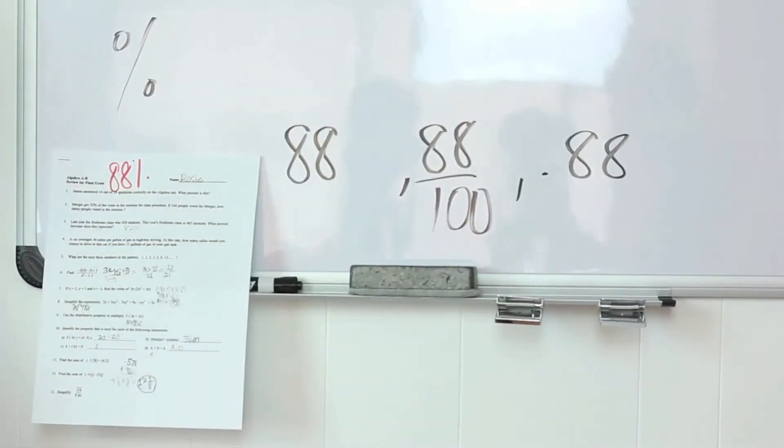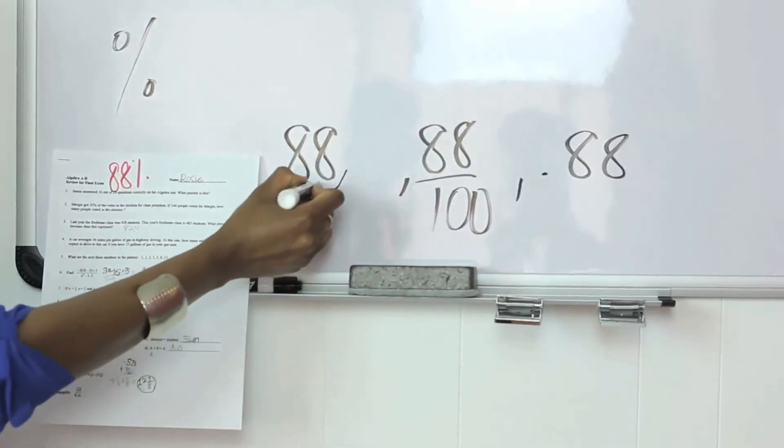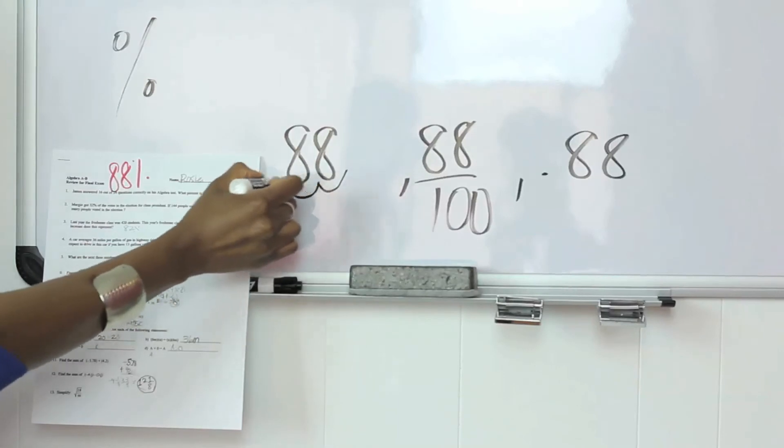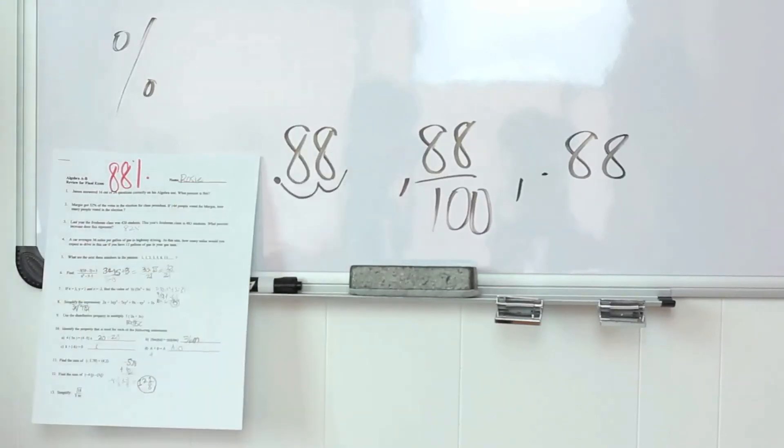Next, you want to put the decimal point two places to the right of the decimal point. One, two. So it's two places to the right.